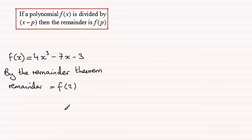And so all we've got to do is just let x equal 2. So we've got 4 times 2³ minus 7 times 2 minus 3. And if you work this out you've got 2³ which is 8, 8 times 4 is 32, minus 14 minus 3, that comes to 15. So there's our remainder.